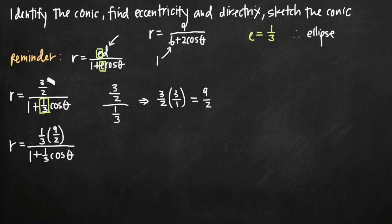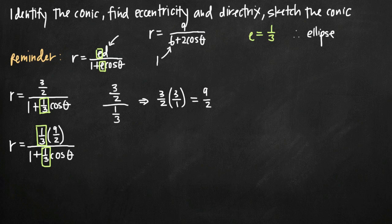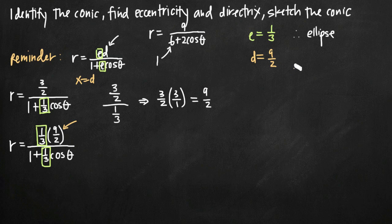We pulled 1/3 out of 3/2, leaving 9/2 inside. We can double-check: 1/3 times 9/2 equals 9/6, which is 3/2 — back where we started. Now we can see the matching eccentricity in both numerator and denominator, confirming that d equals 9/2. Since our formula uses cosine theta with a plus sign, the matching directrix formula gives us x equals d, so the equation of the directrix is x equals 9/2.